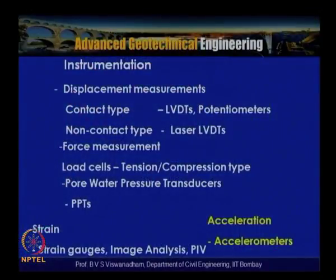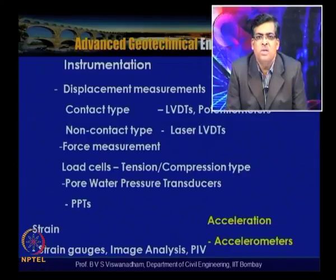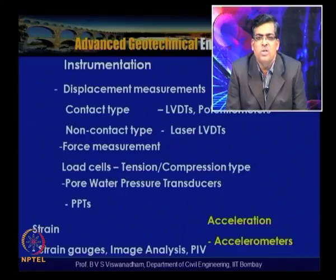In instrumentation there are two main categories. Contact types include linearly variable differential transformers (LVDTs) and potentiometers, which are in contact with the model. Non-contact types include laser LDTs, which work on the principle of triangulation — the smaller the distance range, the higher the resolution.